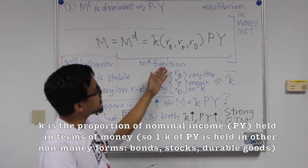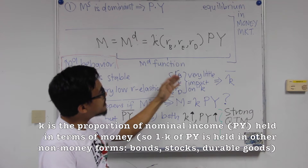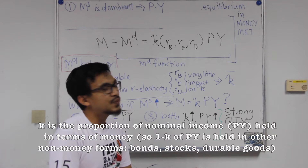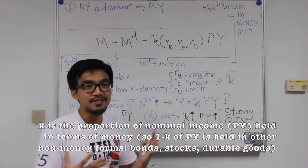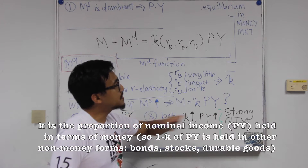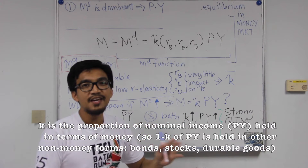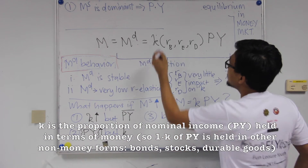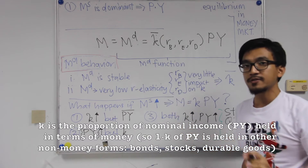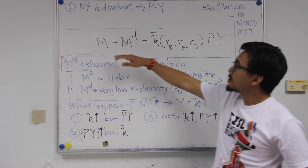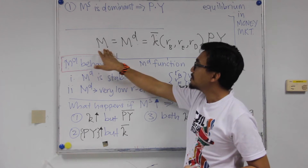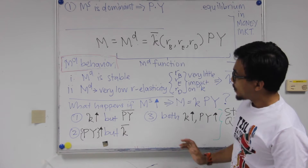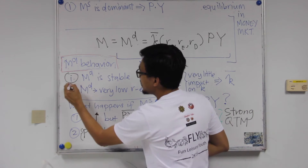Because of that, these three R's will have very little impact on K, so they will not really affect K. We can simplify our discussion by assuming K to be constant. In the money market equilibrium, K can be assumed to be constant and will not change. So in order for equilibrium to hold, money supply equals money demand.